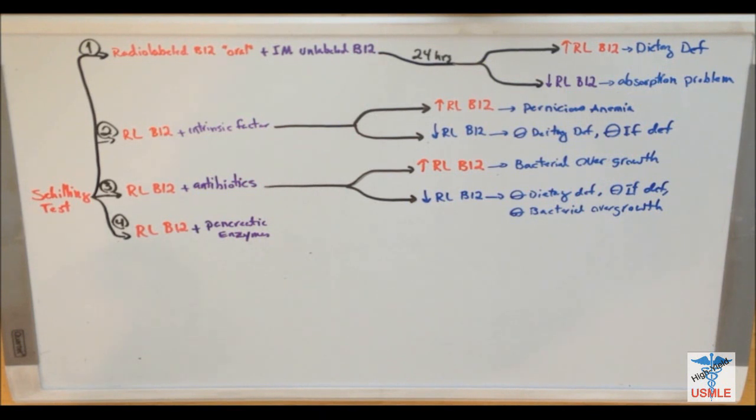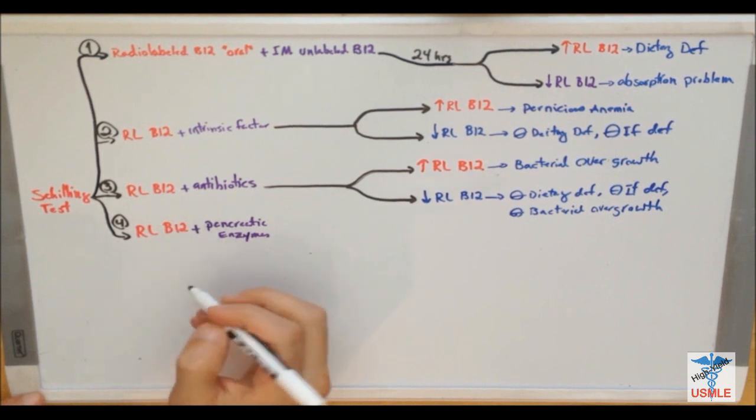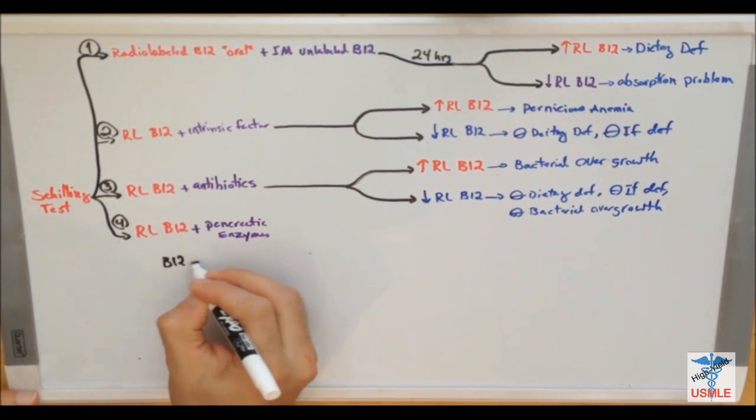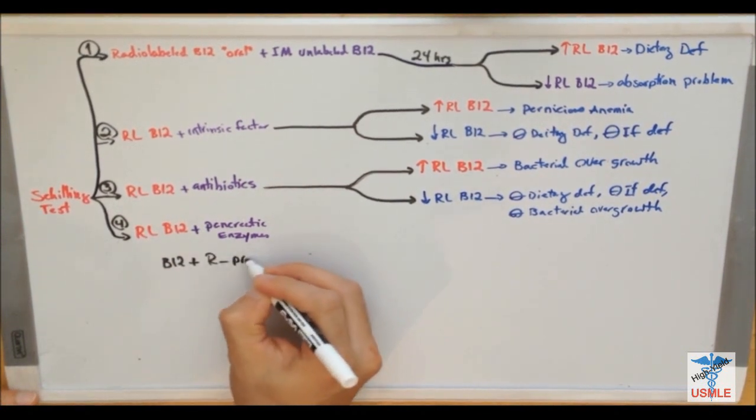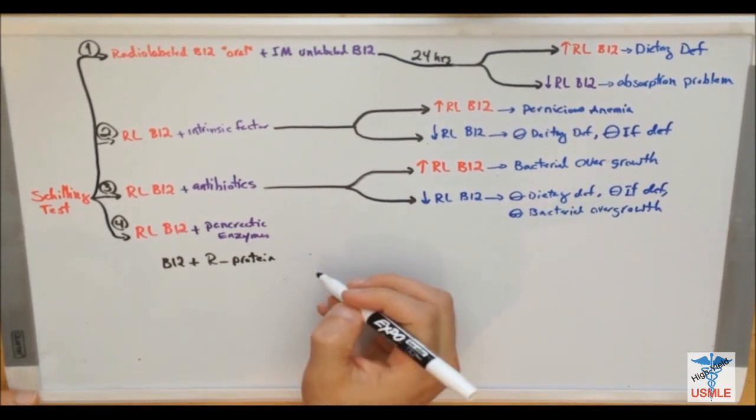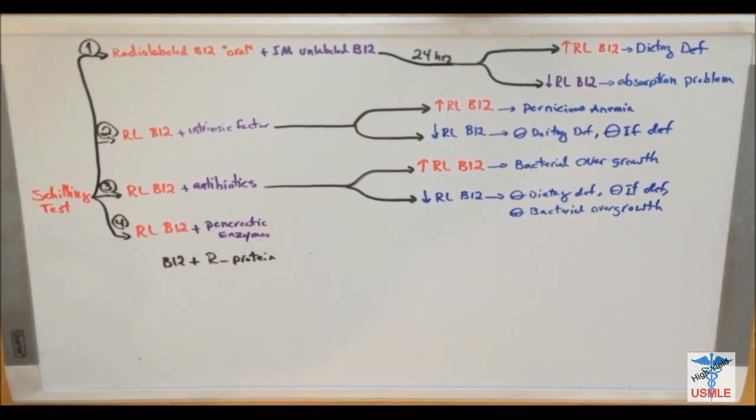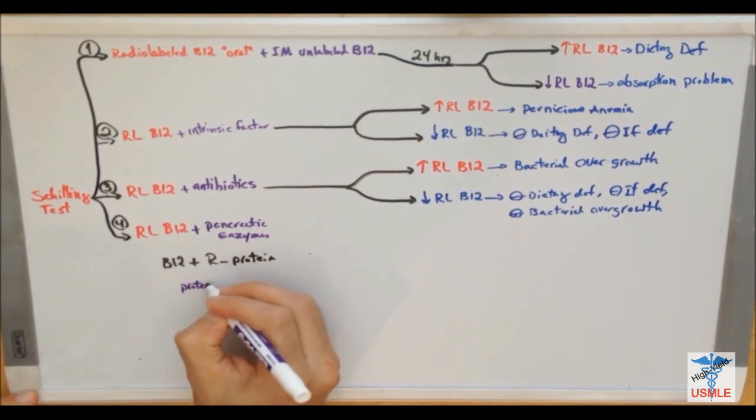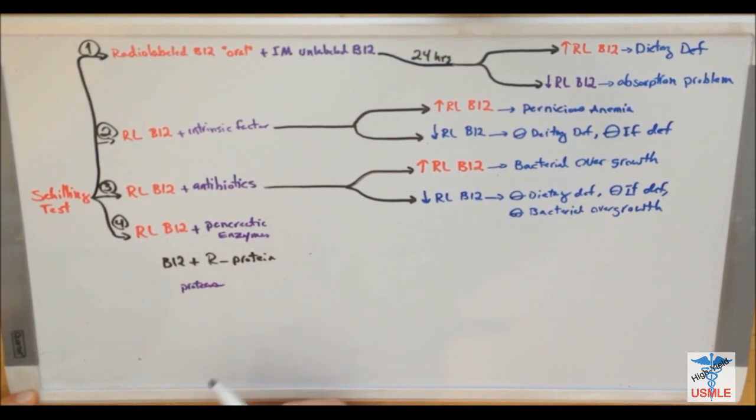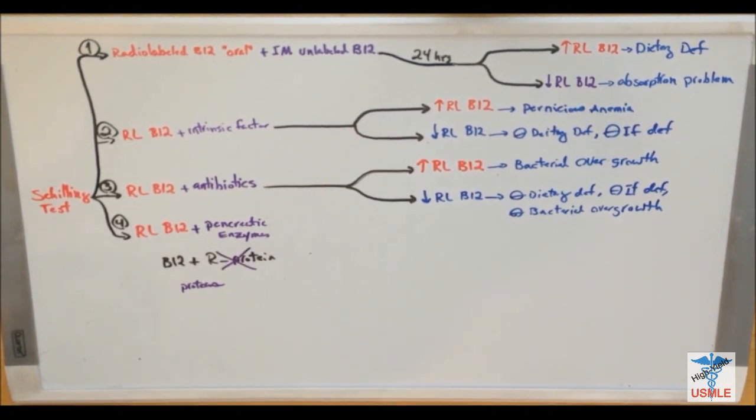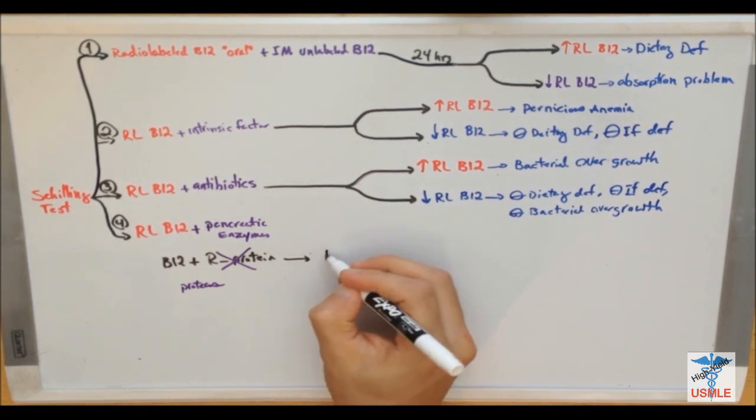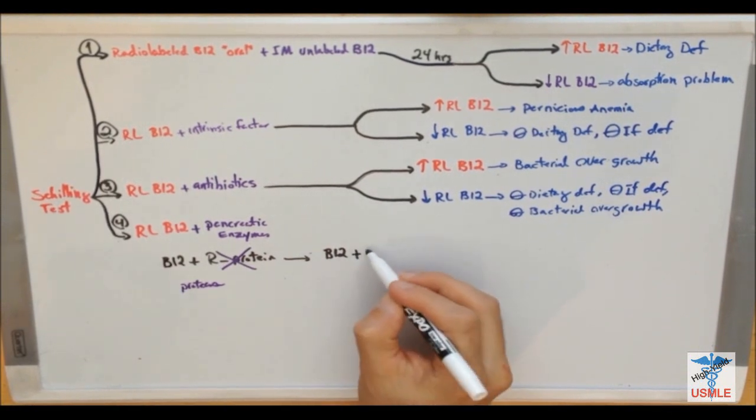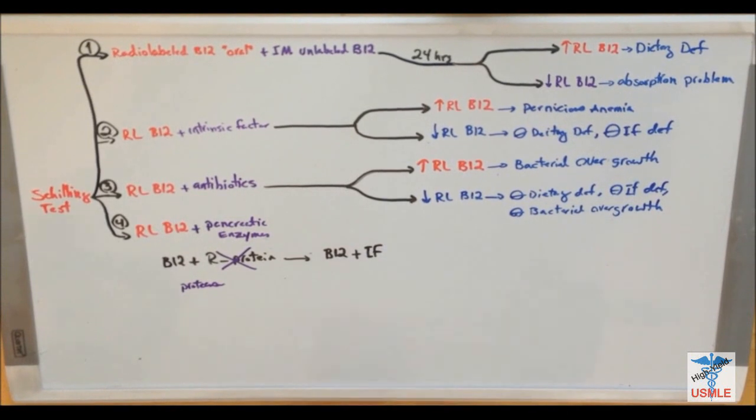Now, the protease will get rid of, let me just write it down. So, inside duodenum, we have B12 attached to R protein. And, what happens is that your pancreas secrete protease, which is an enzyme that cleaves proteins. It will get rid of this R protein. Now, B12, again, becomes free. Now, once it's free, now it can bind to intrinsic factor.